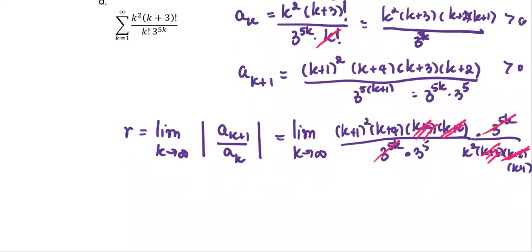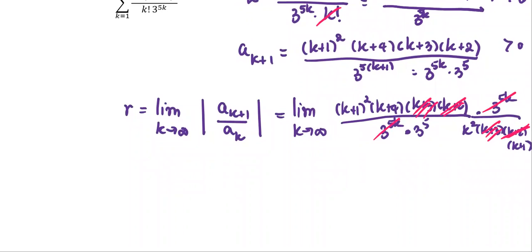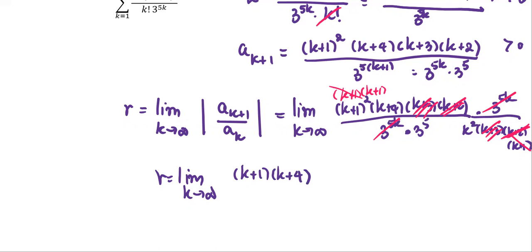We also have k plus 1 squared in the numerator, which we write as k plus 1 times k plus 1. One factor of k plus 1 cancels with k plus 1 in the denominator. This gives us r as the limit as k approaches infinity of the product of k plus 1 and k plus 4, divided by 3 to the fifth multiplied by k squared.